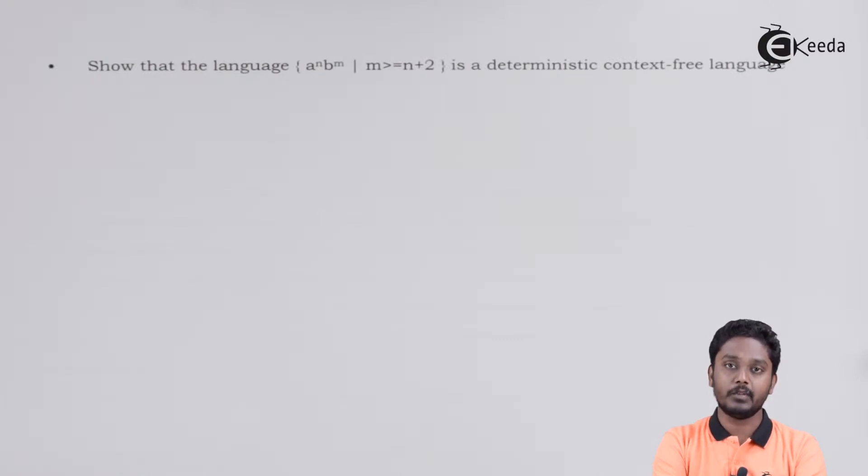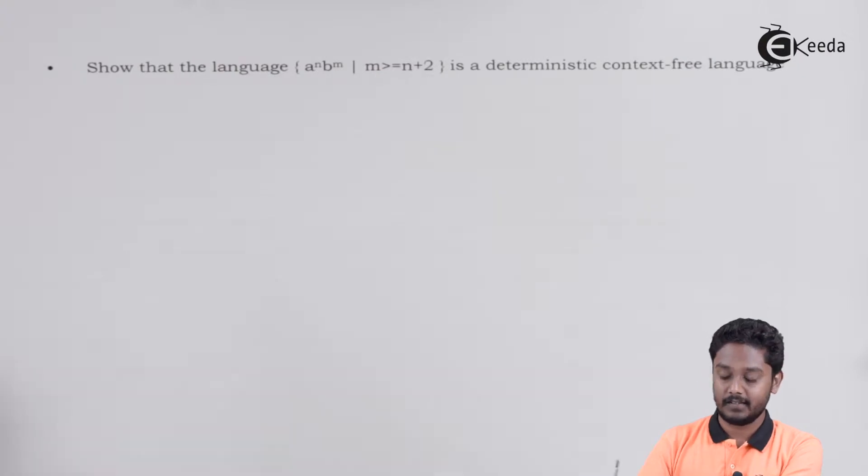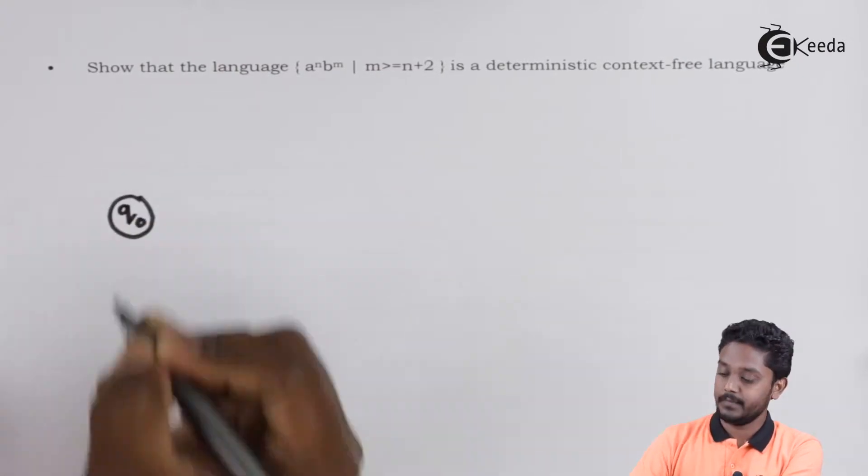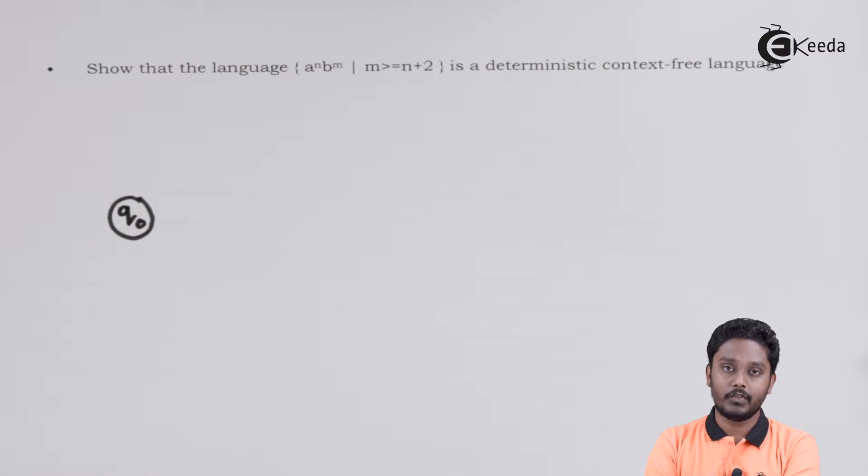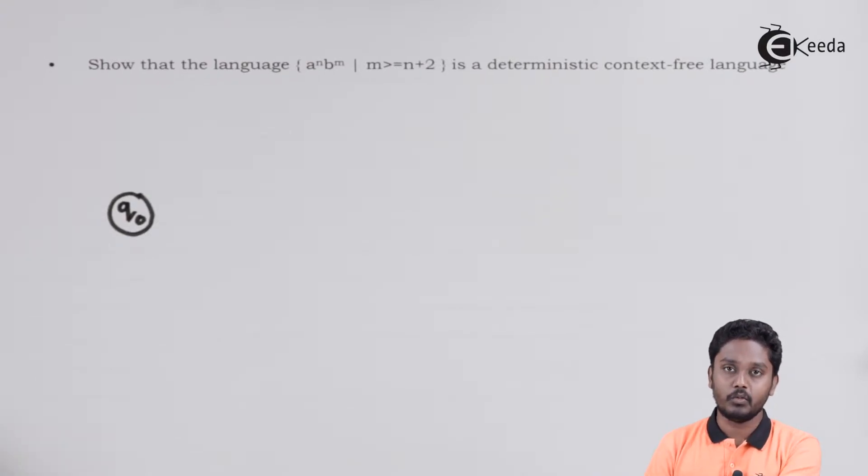And let us start with the DPDA construction. I am taking Q0 as the initial state. With the first A, I will be pushing a 1 onto the stack, considering 0 as the top of the stack initially, and go to state Q1.